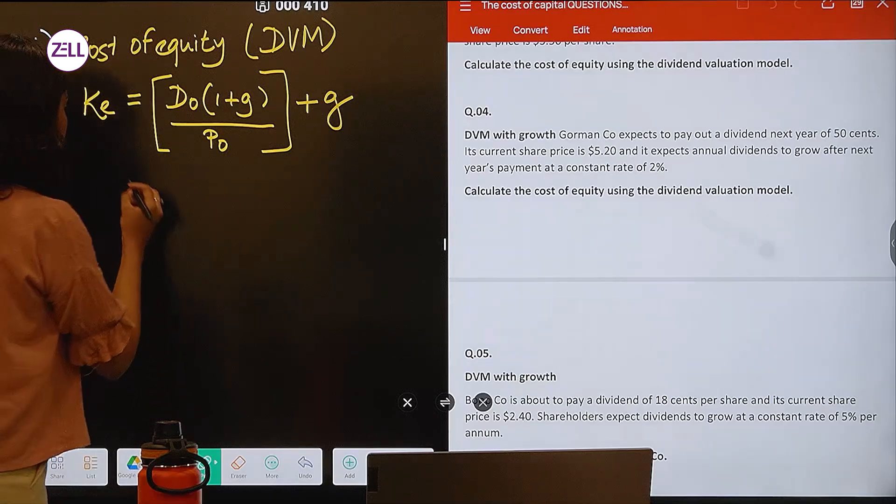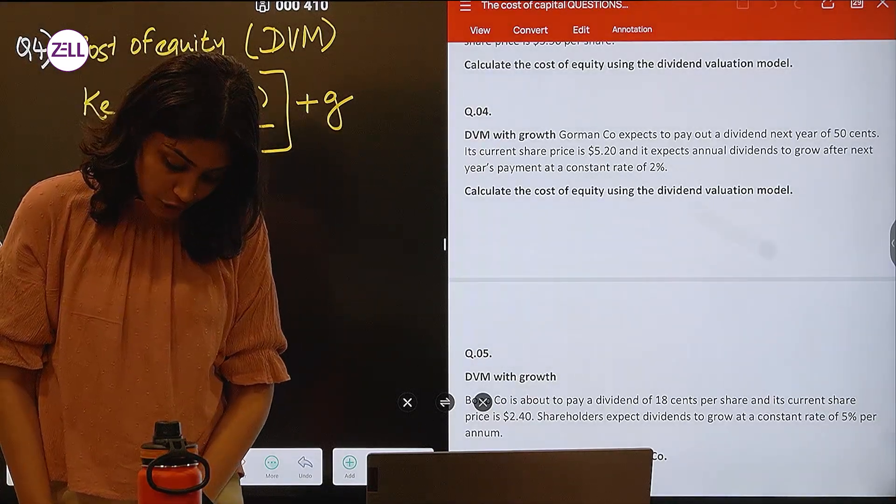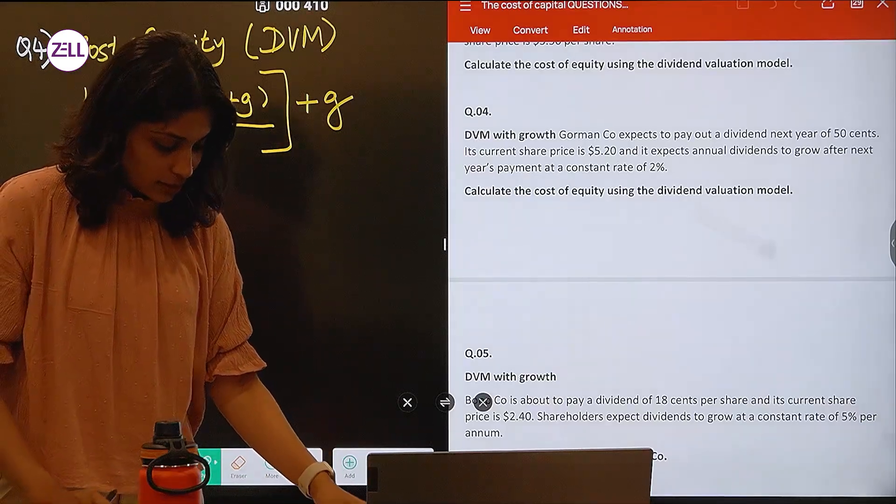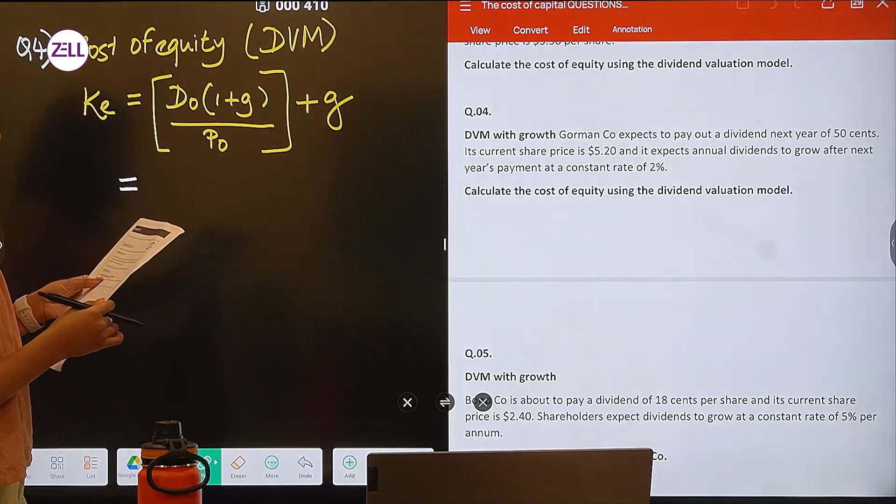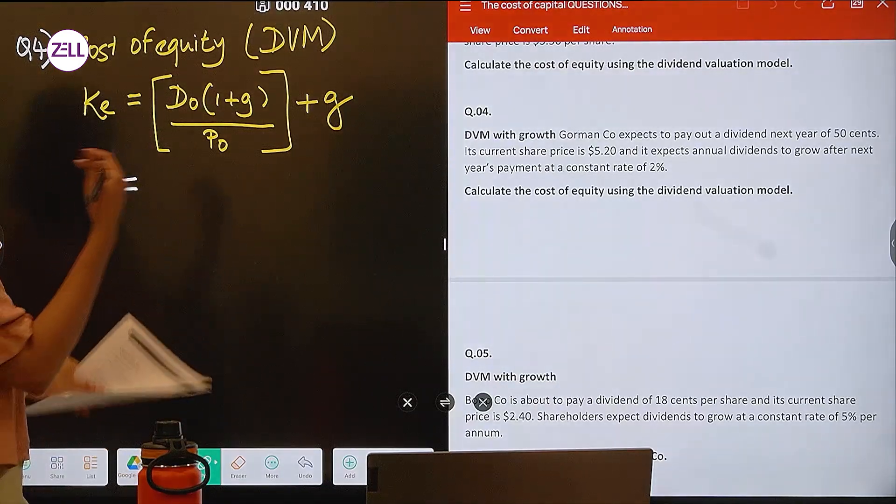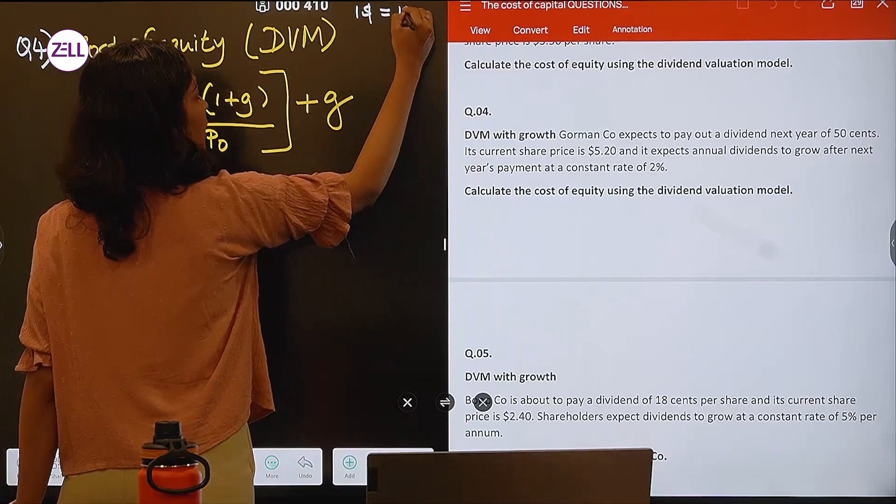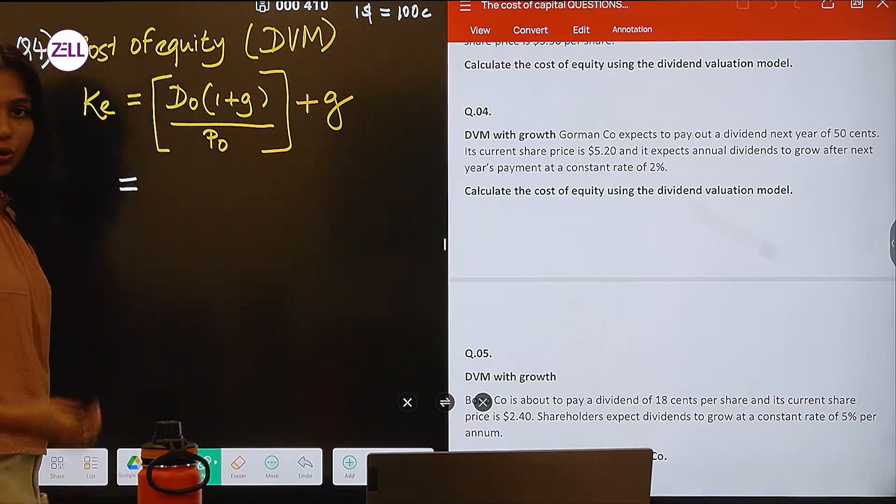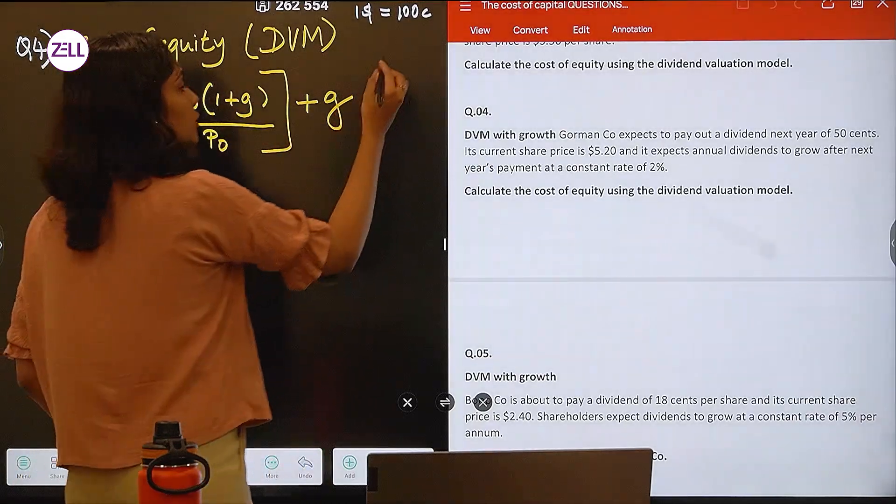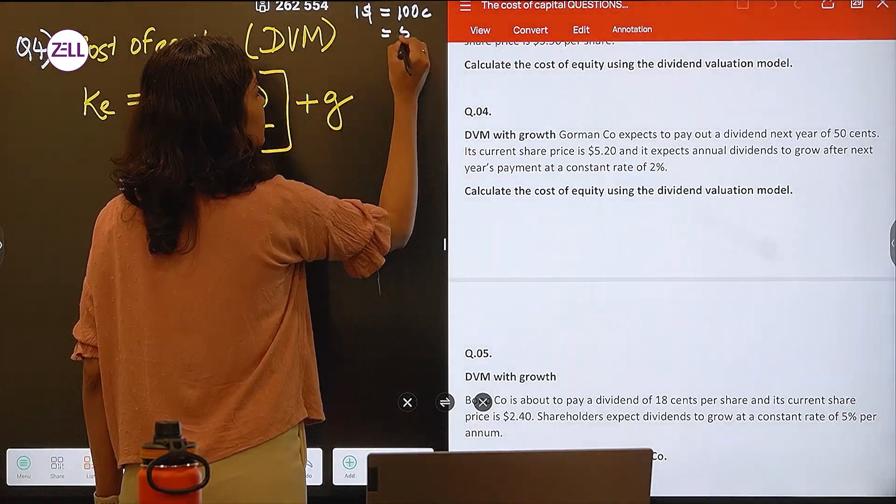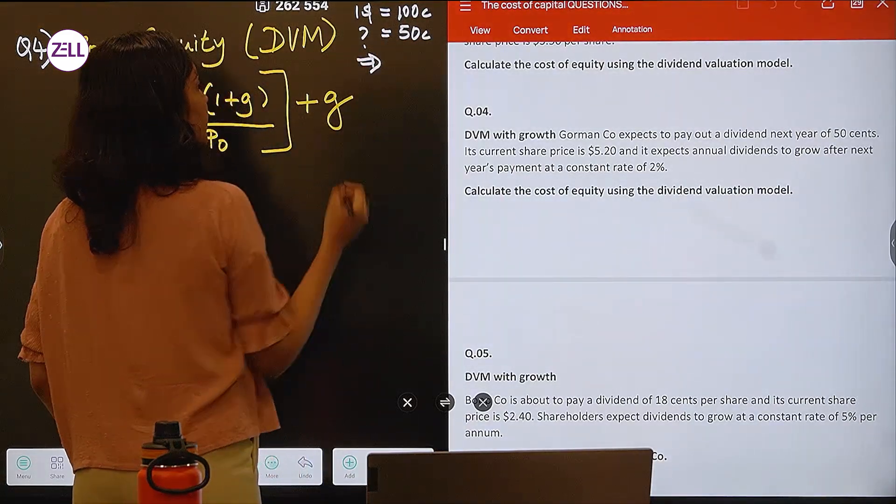So now tell me the figures that I will have to incorporate in my question. Because they are saying that the dividends is how much? 50 cents. So 50 cents means how much? We all know 1 dollar is equal to 100 cents. You know 1 rupee is equal to 100 paise. Similarly 1 dollar is equal to 100 cents. So 50 cents is equal to how much? 50 divided by 100.